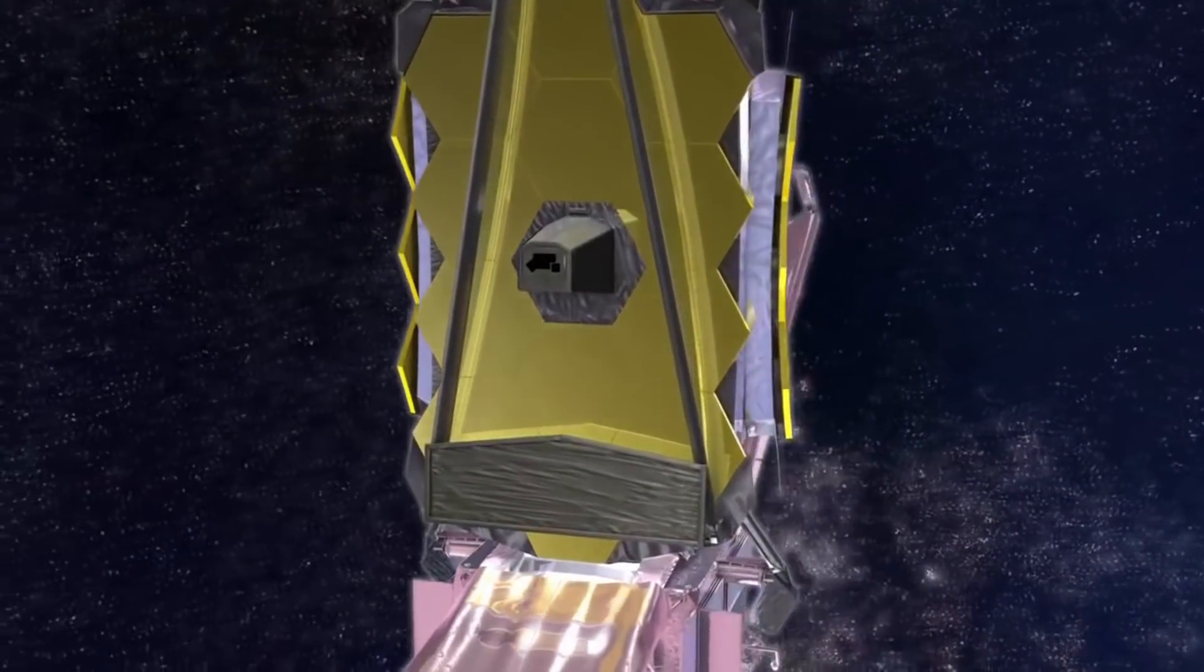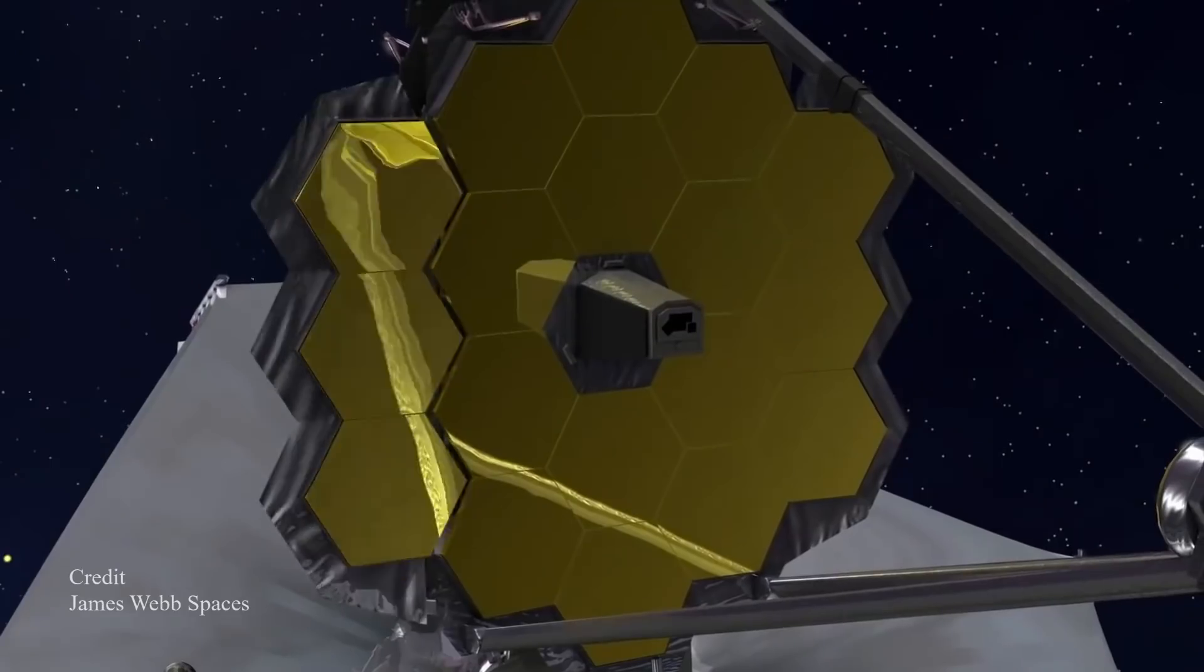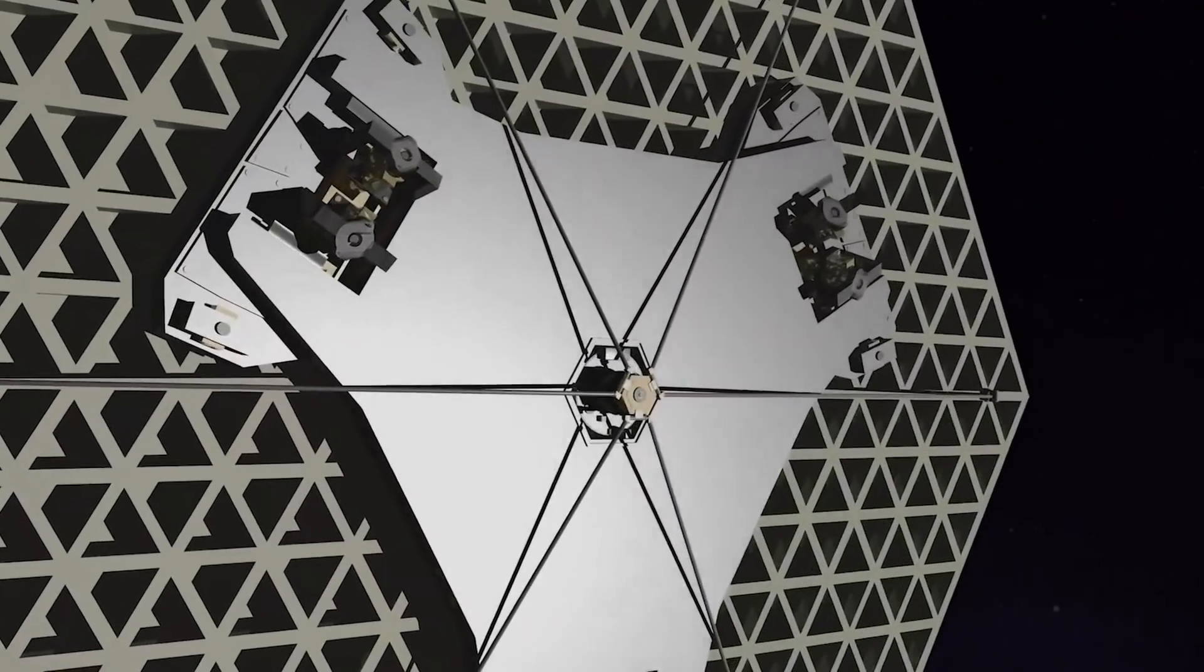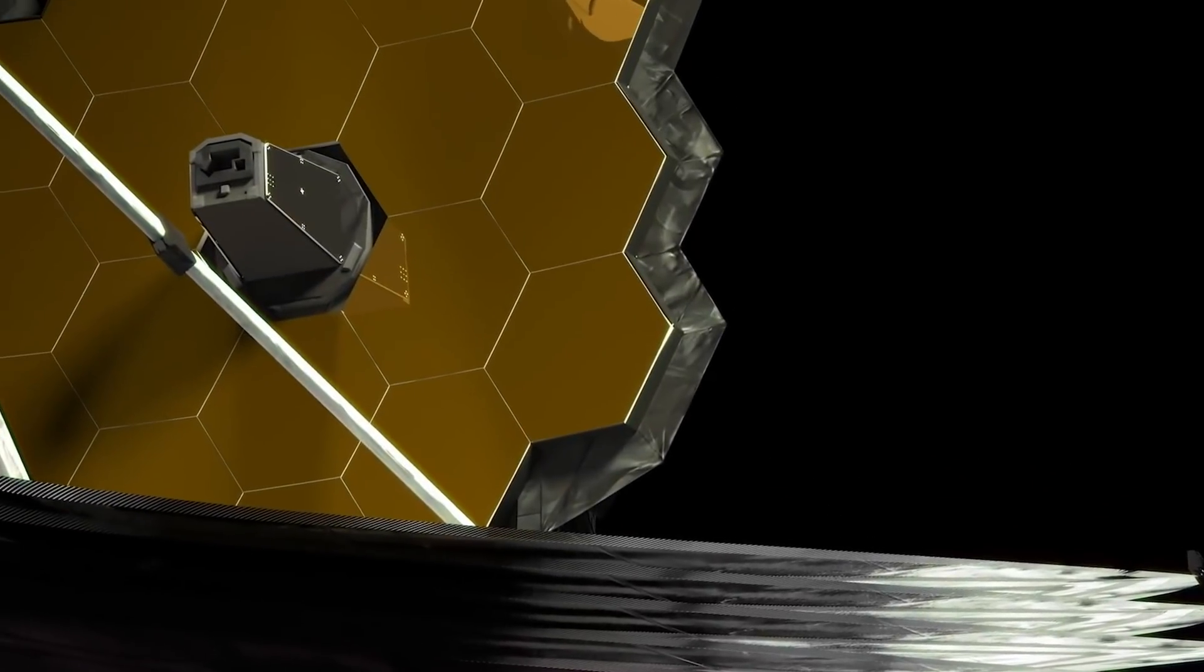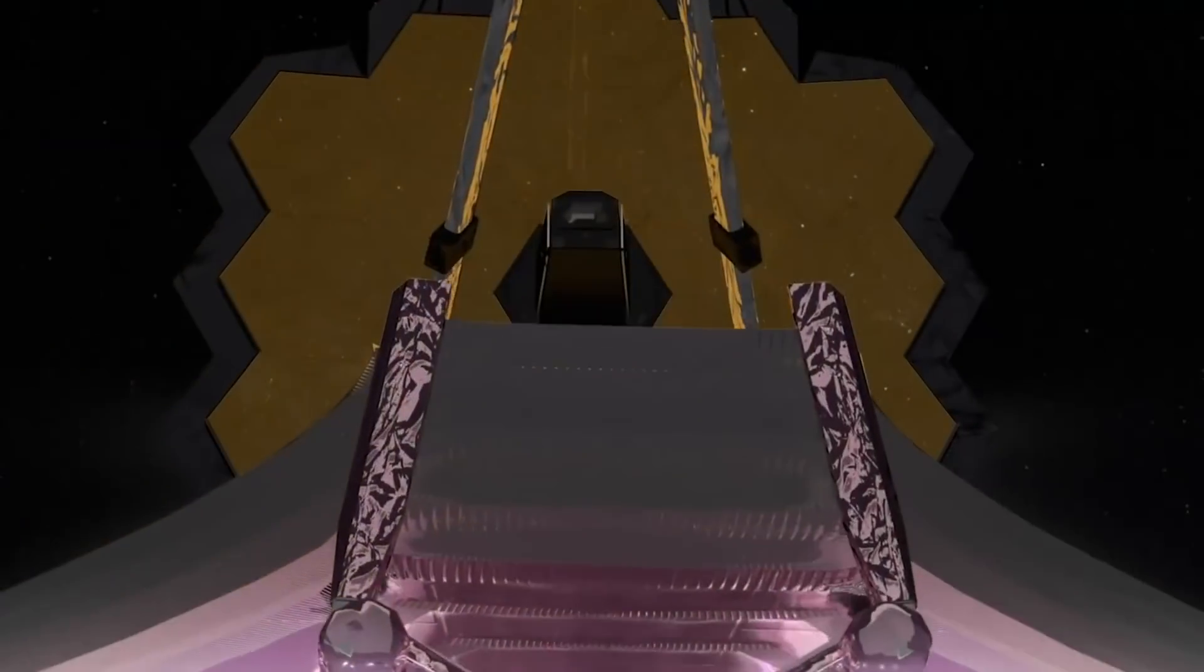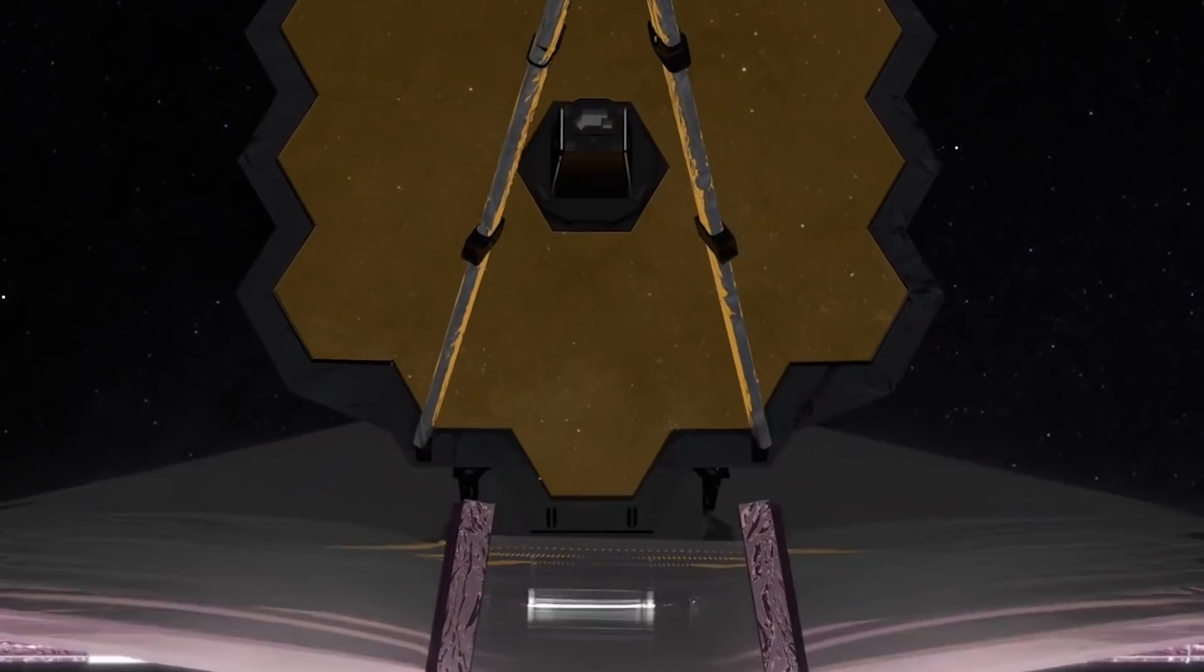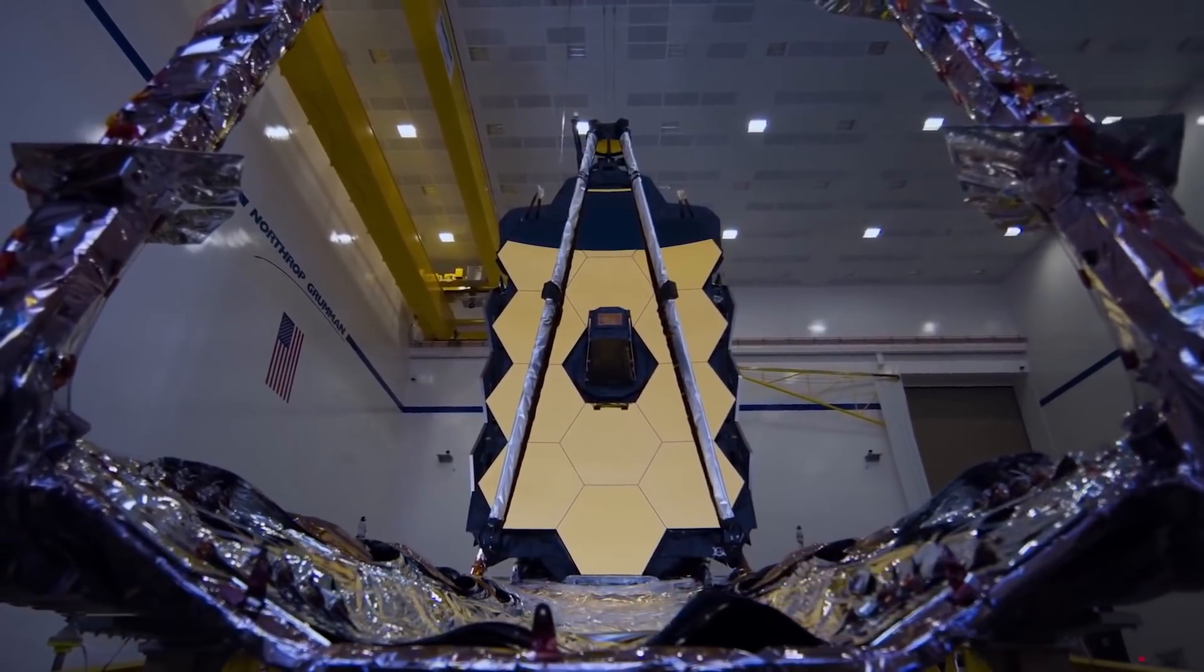The primary mirror is an impressive thing that spans a whopping 21 feet of coated beryllium reflector to give it a collecting area six times as much as what Hubble offers. Webb also uses 18 hexagon mirrors to get as much work as it can do.